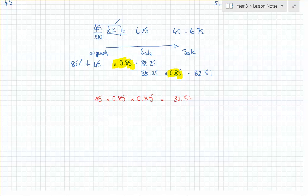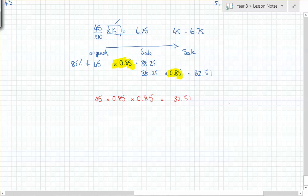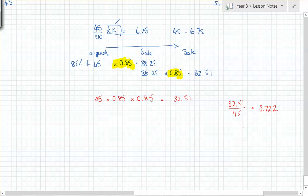Part two: what is the overall percentage decrease? You do 32.51 divided by 45, which gives 0.72. That's clearly a decrease. So the overall decrease is 100 minus 72.25 = 27.8 percent — approximately 27.8%.